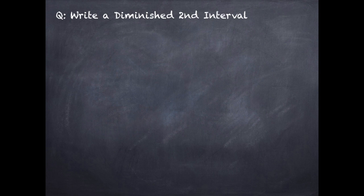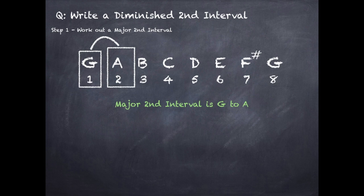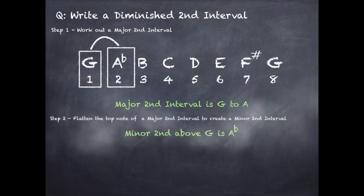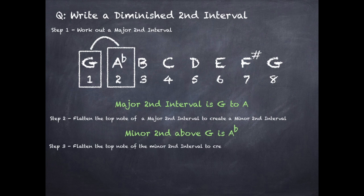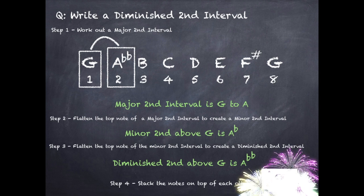To write a diminished second interval, step 1: work out a major second interval. Using G as our basis, a major second is G to A. Step 2: convert that to a minor interval by flattening the top note, so A becomes A flat — a minor second is G to A flat. Step 3: flatten the top note of the minor second interval to create the diminished second interval — A flat becomes A double flat, giving a diminished second which is G to A double flat. Step 4: stack the notes on the stave.